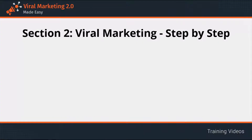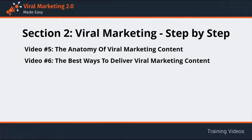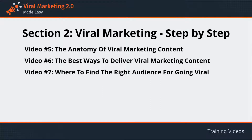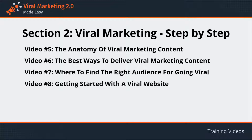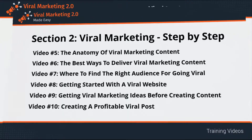Welcome to Section 2: Viral Marketing Step by Step. Here we are going to discuss the characteristics of viral content, how to create it, how to make it go viral, and where to make it go viral. The contents in this section include: the anatomy of viral marketing content, the best ways to deliver viral content, where to find the right audience, getting started with a viral website, getting viral marketing ideas before creating content, and creating a profitable viral post.